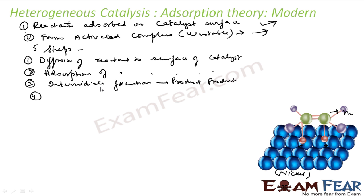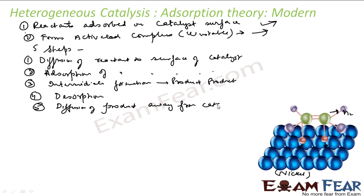Once the intermediate is formed and the product is obtained, the fifth step is desorption — the desorption of the final product from the surface — which creates space for the next reaction. After desorption, the fifth step is diffusion of the product away from the catalyst. So: reactant comes near the surface, reactants are adsorbed, intermediate and product are formed, product is desorbed from the surface, and finally the product diffuses away from the catalyst.